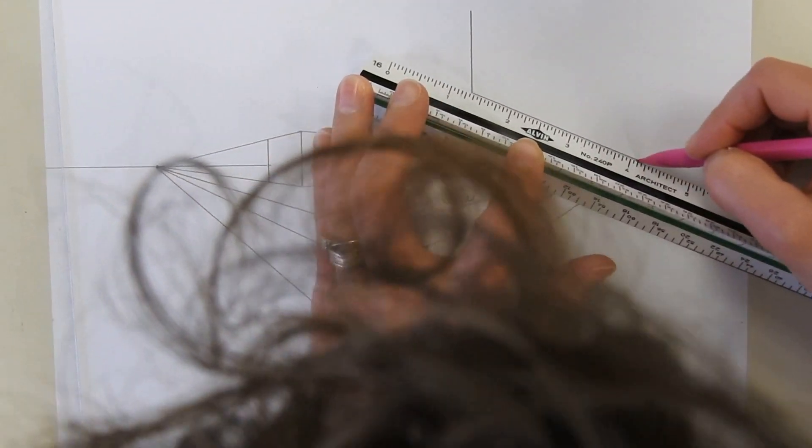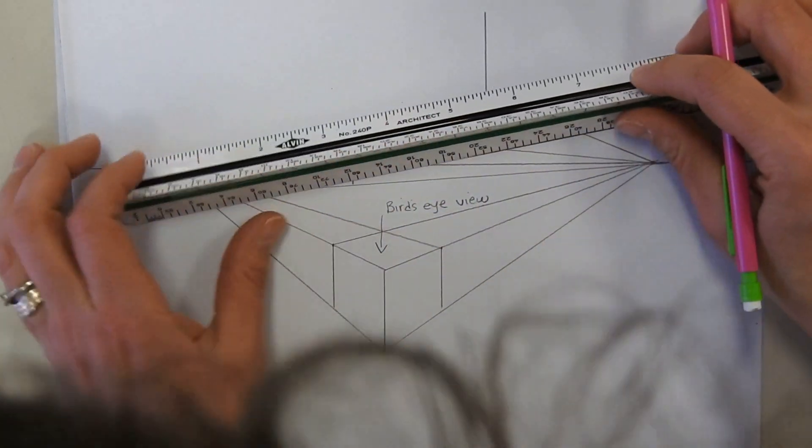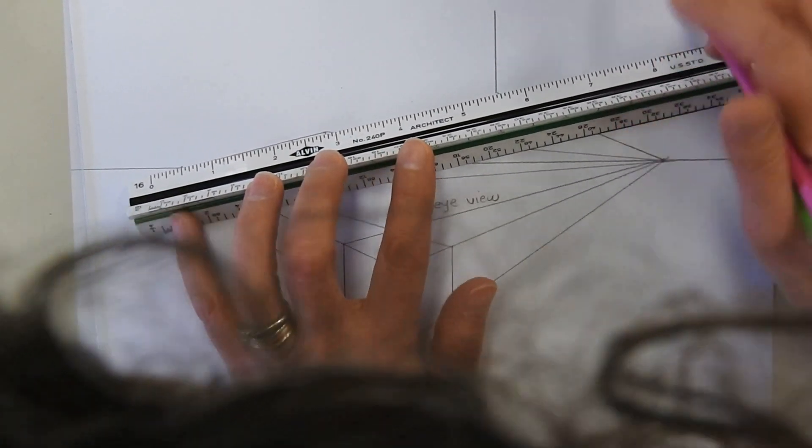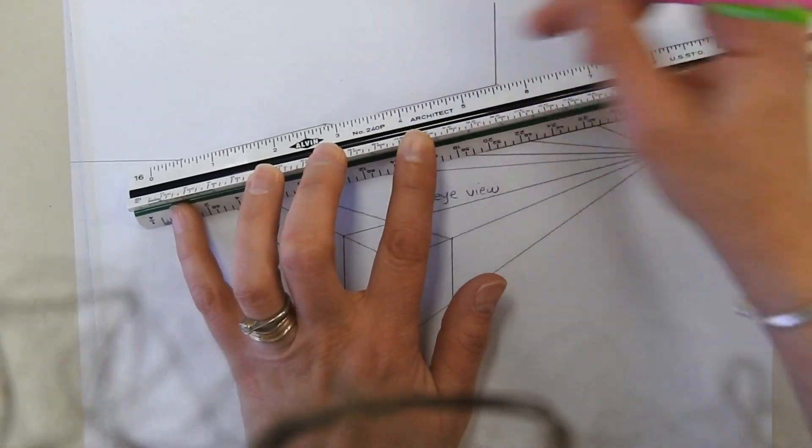...the line down to the vanishing point this way. And because I don't want to draw on my other cube, I'm going to just draw part of it like that.